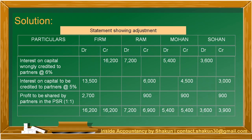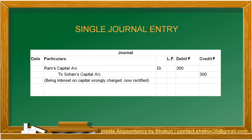The next step is to total Ram, Mohan and Sohan's debits and credits and find the difference between DR and CR, writing the difference on the greater side. In case of Ram, the difference is 300 — Ram's capital should be debited with 300. In case of Mohan, both sides are equal, so nil. In case of Sohan, the difference is 300 on the CR side — Sohan's capital is credited with 300. Therefore, the journal entry is: Ram's capital account DR 300 to Sohan's capital account 300, being interest on capital wrongly charged now rectified.